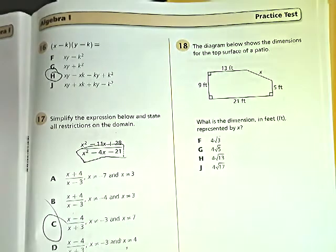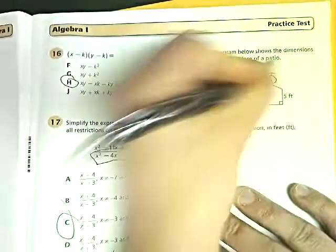Now, in order to do this, we are going to look at question number 18. Question number 18 says, the diagram below shows the dimensions of the top surface of a patio. What is the dimension in feet represented by x? Well, x is right here.